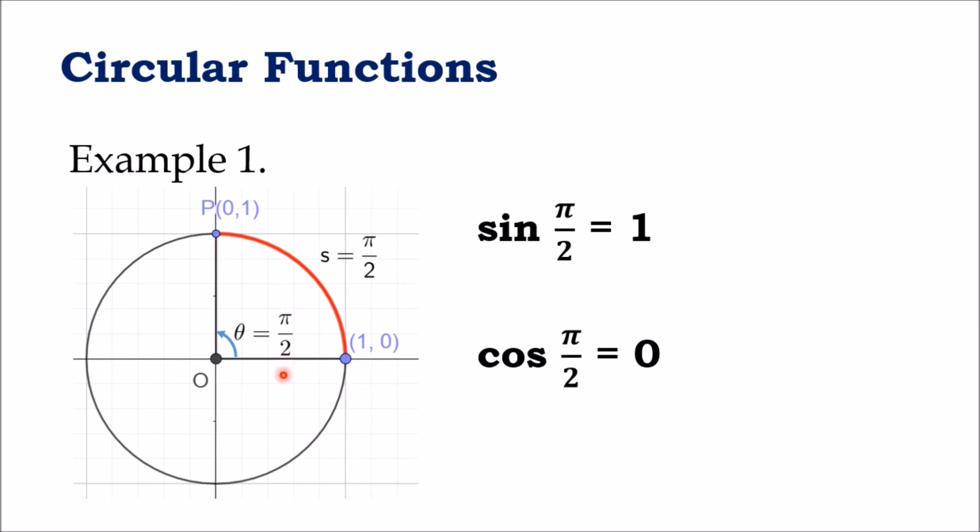What is sine π/2? Or, what is cosine π/2? By the definition, we have sine π/2 is equal to 1, because point P has Y coordinate equal to 1. And cosine π/2 is equal to 0 because the X-coordinate of P on the terminal side on the unit circle is 0.